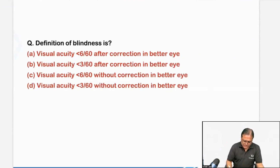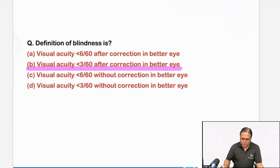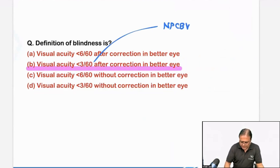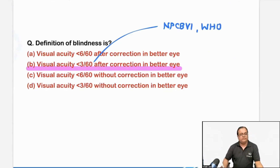Definition of blindness — one of the easiest questions. Less than 3/60 after best possible correction. This is the same definition in the National Program for Control of Blindness and Visual Impairment, as well as the current WHO definition.